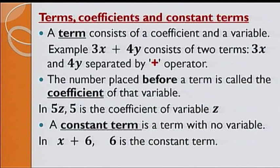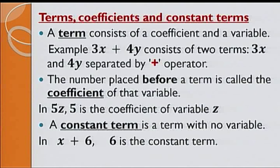Therefore, algebraic expression 4a plus 7. The coefficient of a is 4, the operator is the plus, and the constant term is 7. Here is an exercise for you to practice.